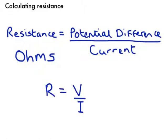And here's the equation again that you'll see it written out. So R for resistance measured in Ohms is equal to V for potential difference measured in volts over the current measured in amps. And just be aware that current is given by the letter I.